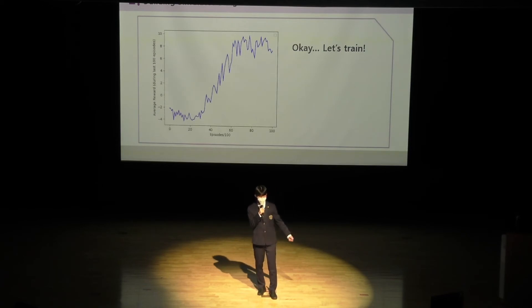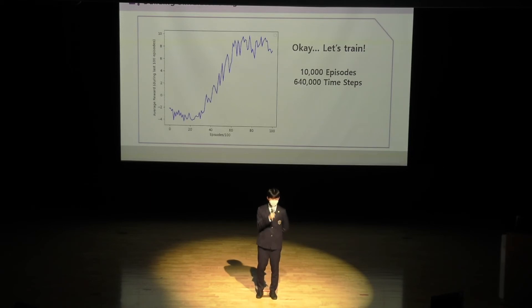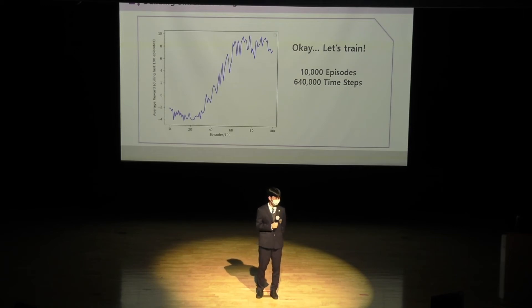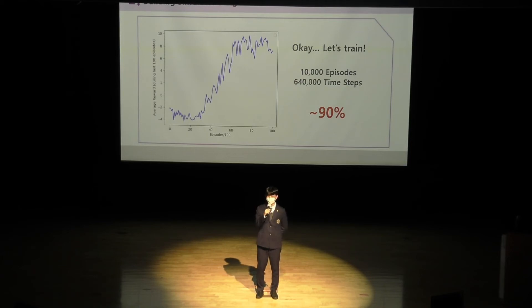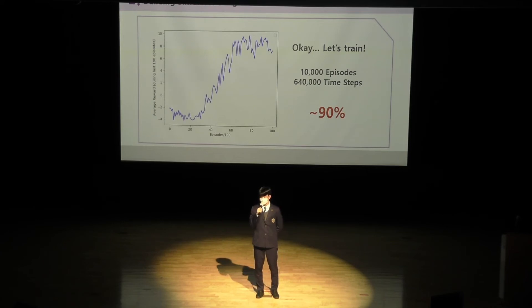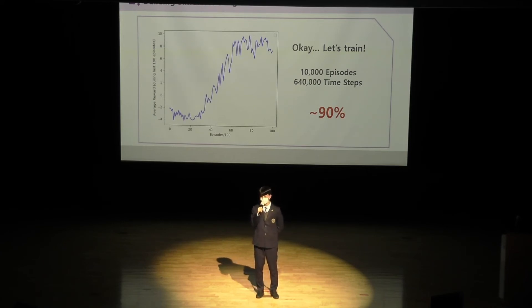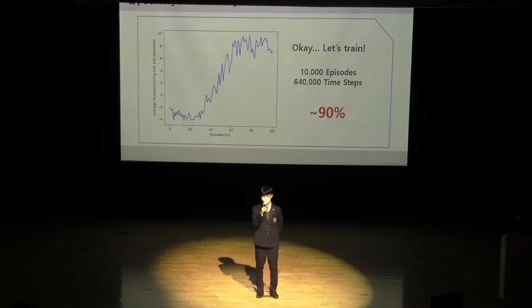I ran the simulator 10,000 times, and the agent learned from approximately 640,000 time steps of data. As you can see in the figure, the average reward increased gradually as the simulator ran repeatedly, and the final success rate of obstacle avoidance reached approximately 90%. I also prepared two videos showing how the agent evolved.